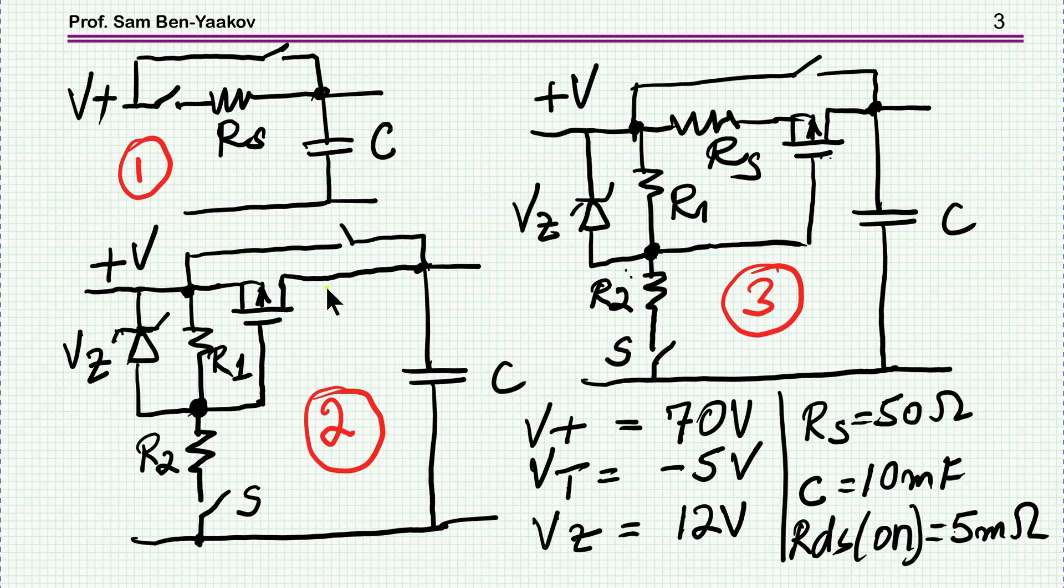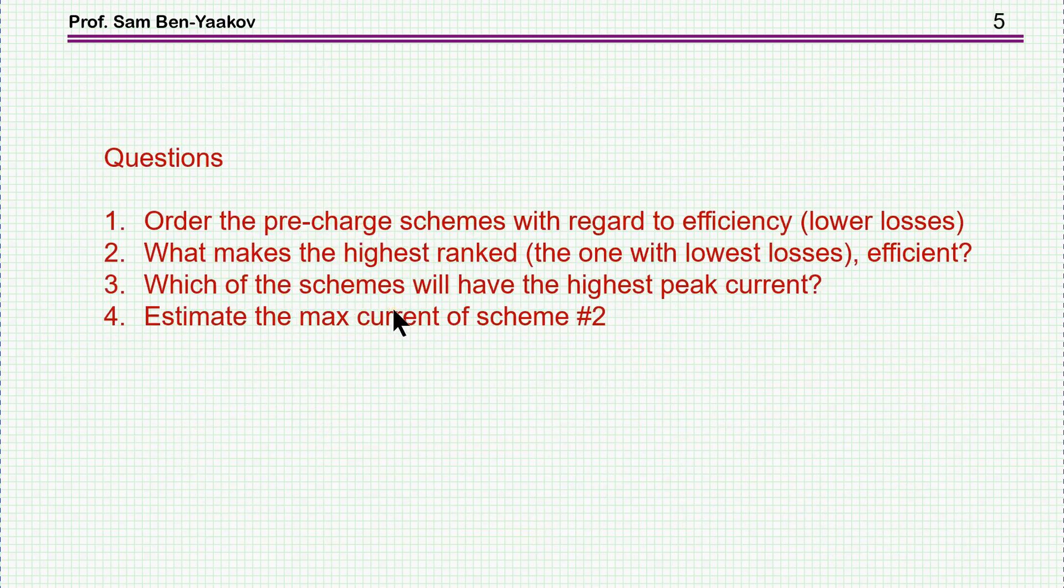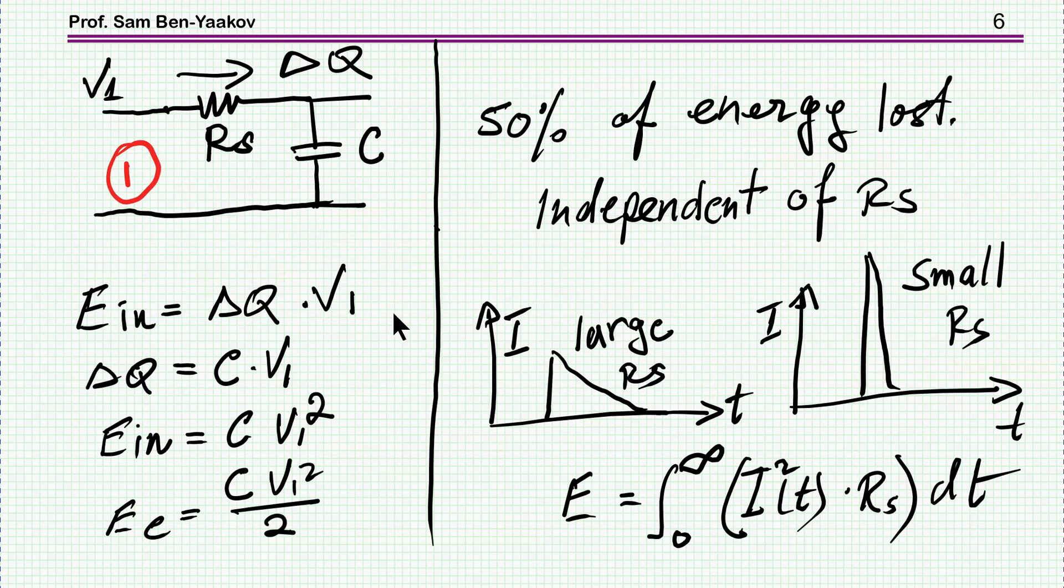And to estimate the maximum current of scheme number one, which is this one with the simple transistor, which is turned on by this switch, and then current is flowing through the transistor. So these are the questions, and here are my answers to them.